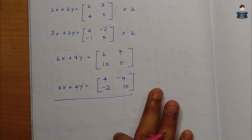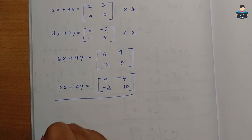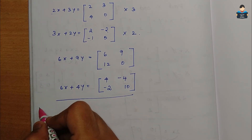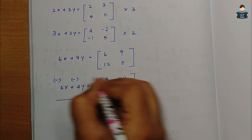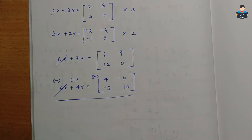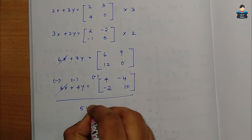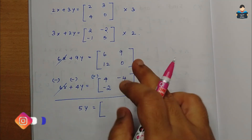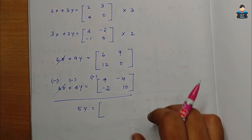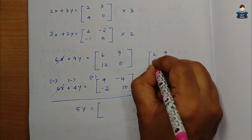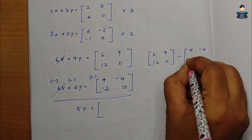We will see this relates to solving linear equations from the 10th chapter using matrix form. After subtraction, 6x minus 6x cancels. We are left with 9y minus 4y equals 5y on the left side. On the right side we compute element-wise: 6 minus 4 is 2; 9 minus of minus 4 is 9 plus 4 equals 13; 12 minus of minus 2 is 12 plus 2 equals 14; and 0 minus 10 equals minus 10.